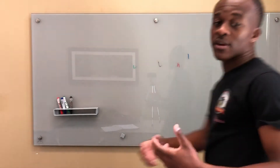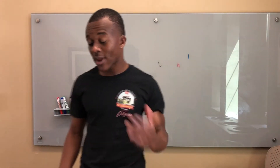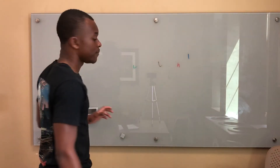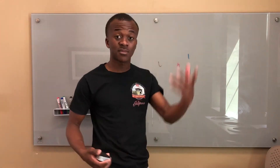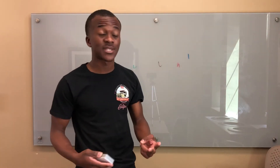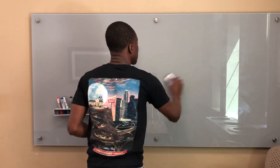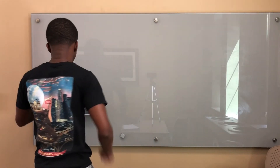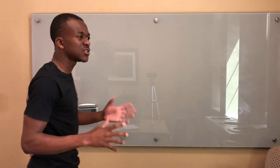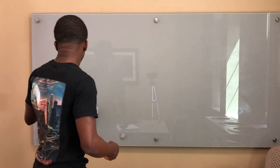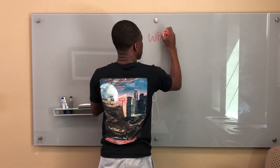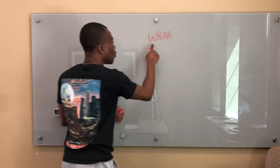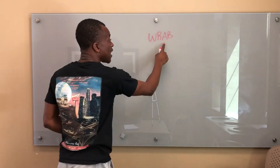Hello everybody. Today we're going to be talking about the Rankine and Brayton cycles - these are power cycles. We'll start off by talking about the Brayton cycle, which uses air. The Rankine cycle is like the Brayton cycle but it uses water. Here's a mnemonic: RAW - water for Rankine and air for Brayton.